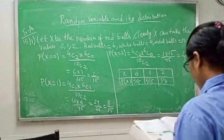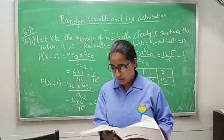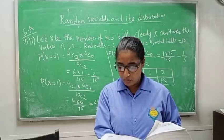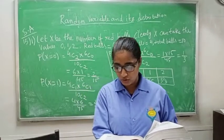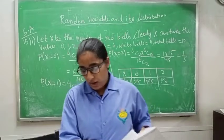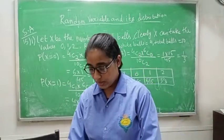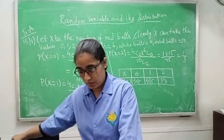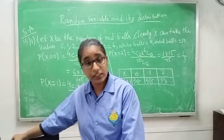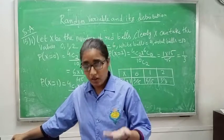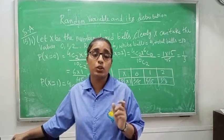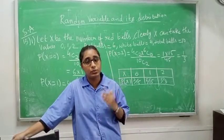Class 12, short answer question number 51. A box contains 4 white and 6 red balls. If 2 balls are drawn at random, find the expectation of the number of red balls. Expectation means mean — find the mean or expectation of the number of red balls.